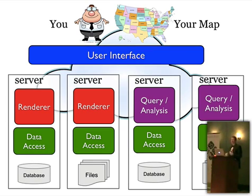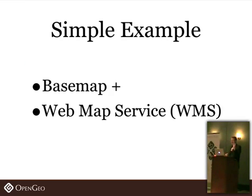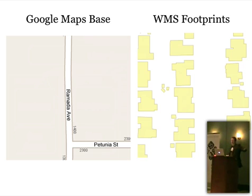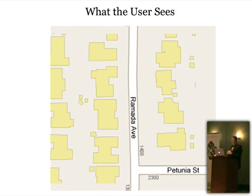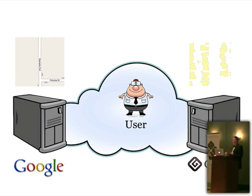So here's a canonical simple example — a two-layer map. A base map can provide context, and a layer of interest drawn using a web map service, a remote rendering service. Google can provide the base map, and the remote renderer can provide the overlay. All that's necessary is to ensure both layers are pulled in using the same projection and scale, and the result can be composited in the user's web browser. The user doesn't need to know or care that the map is produced from two separate places, two separate sources of data, from two completely different organizations.